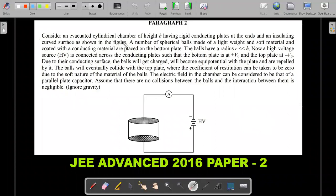This is the paragraph and these are the two questions. So pause the video and try to solve the problem and then come back for the explanation. I'm going ahead with the formal wording of the question. Consider an evacuated cylindrical chamber of height H having rigid conducting plates at the ends and an insulating curved surface as shown in the figure. A number of spherical balls made of lightweight and soft material and coated with a conducting material are placed on the bottom plate. The balls have radius r very small compared to H.